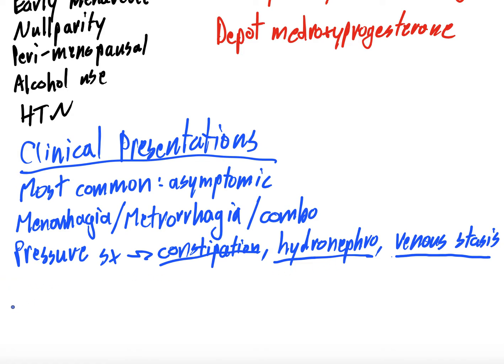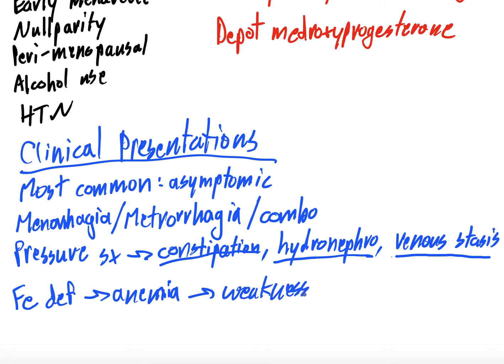And as with all of these — endometrial polyps and adenomyosis — you can get iron deficiency, which gives you anemia, which means systemic symptoms of anemia such as generalized weakness, orthostasis, dizziness, and fatigue. So to summarize: mostly asymptomatic, but menorrhagia and metrorrhagia — heavy periods and bleeding in between periods — pressure symptoms if very large, and iron deficiency anemia.